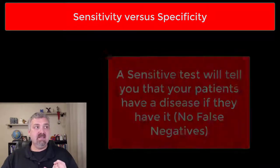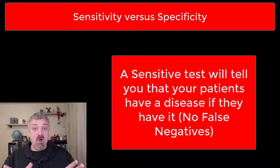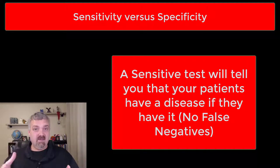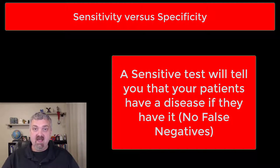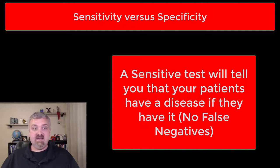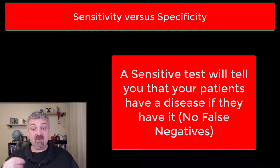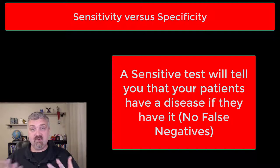So what does that actually mean? Sensitivity would be: I know that my patient has this disease — what are the chances that the test I'm doing is going to show that the patient has it? If a test is 100% sensitive, then everyone that has the disease will be told they have it, so you won't have any false negatives. A false negative is when someone has a disease and a test shows they don't.